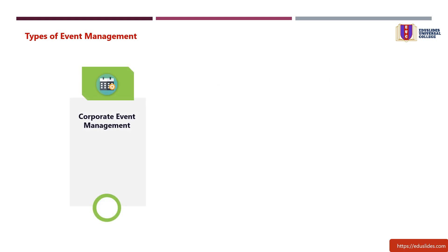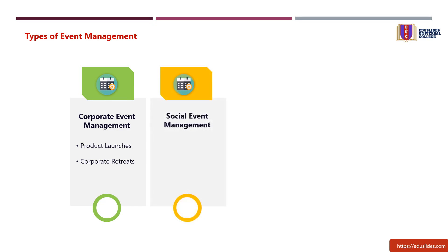1. Corporate Event Management: This may include Product Launches — events to introduce and promote new products or services — and Corporate Retreats — off-site meetings or team-building events for companies. 2. Social Event Management: This may include Birthday Parties — planning and executing birthday celebrations for individuals of all ages — and Anniversary Celebrations — events to commemorate personal or business milestones.